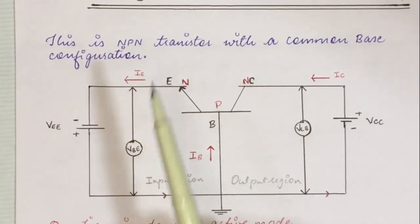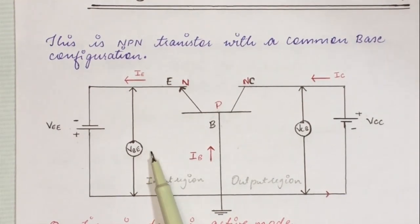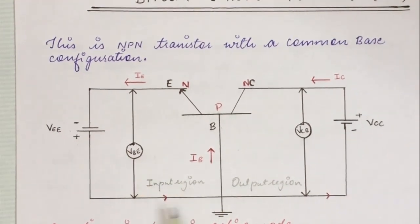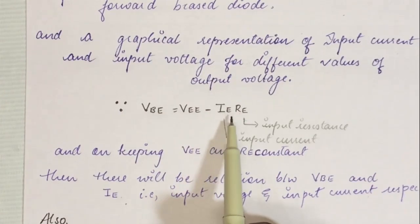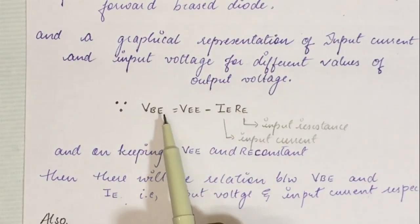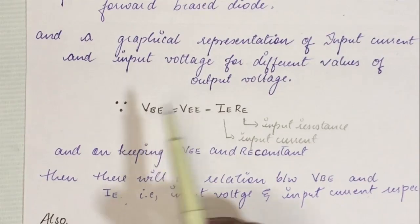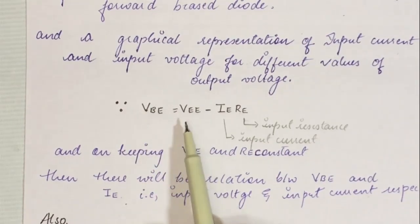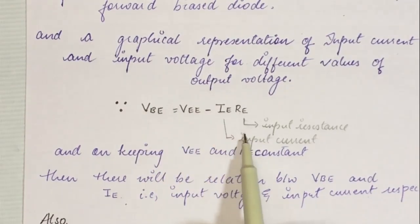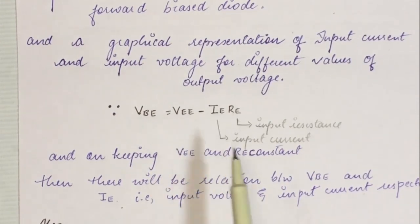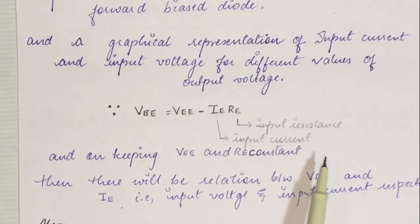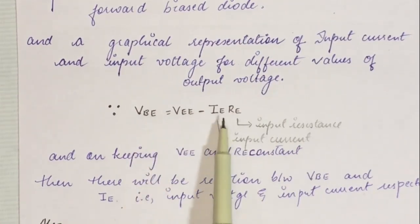Looking at the input circuit of the BJT, IE is the input current and VBE is the input voltage. Applying Kirchhoff's voltage law to this input circuit, we get the equation: VBE = VEE − IE·RE, where VBE is the potential difference between emitter and base, VEE is the battery voltage in the input circuit, IE is the emitter current, and RE is the input resistance. Since VEE and RE are constants, only VBE and IE change.